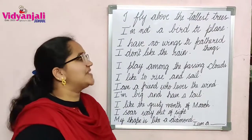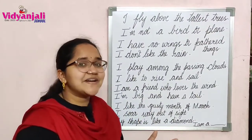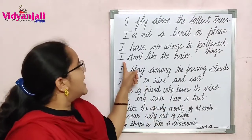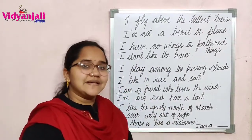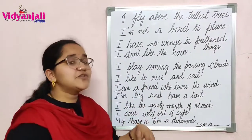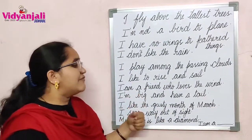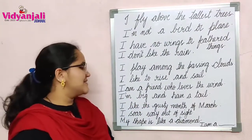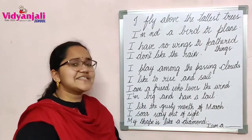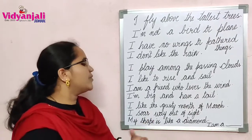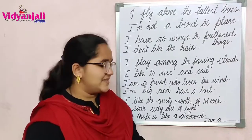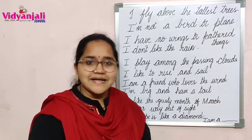I fly above the tallest trees. I'm not a bird or plane. I have no wings or feathered things. I don't like the rain. I play among the passing clouds. I like to rise and sail. I'm a friend who loves the wind. I'm big and have a tail. I like the gusty month of March. I soar way out of sight. My shape is like a diamond. I am a blank.